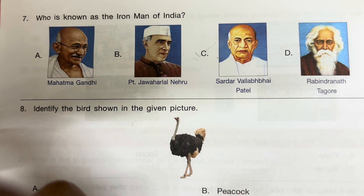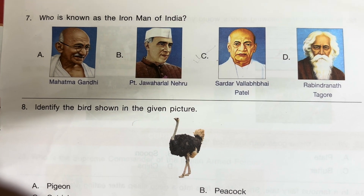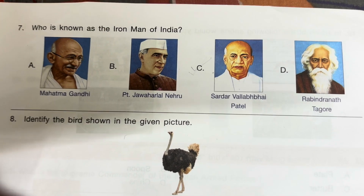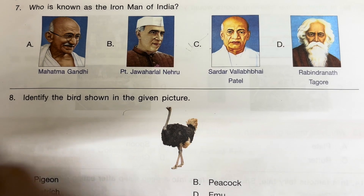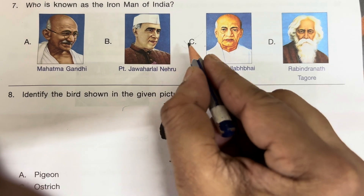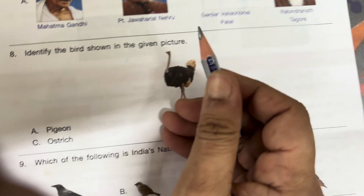Question 7: Who is known as the Iron Man of India? Options: Mahatma Gandhi, Jawaharlal Nehru, Sardar Vallabhbhai Patel, Rabindranath Tagore. Answer is C — Sardar Vallabhbhai Patel.